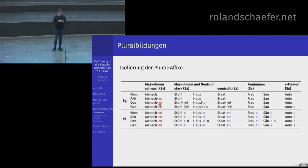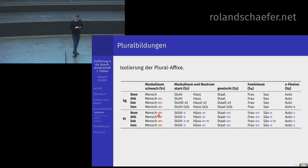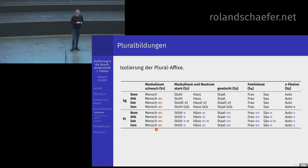Wir versuchen jetzt zu isolieren, was hier Plural-Affixe sein könnten – die Bestandteile, die tatsächlich den Plural anzeigen. Alle diese Wörter haben im Plural nach dem Stamm immer ein ganz bestimmtes Element in allen Formen: entweder N, Ö, oder S. An den Stamm kommt im Plural immer eine bestimmte Endung – das könnte doch eigentlich die Pluralendung sein. Außer bei Menschen haben Sie in fast allen Formen dieselbe Endung – das ist eher die Endung für nicht-Nominativ-Singular.